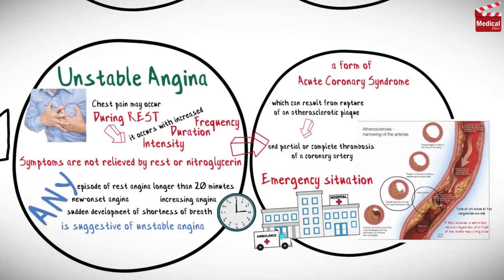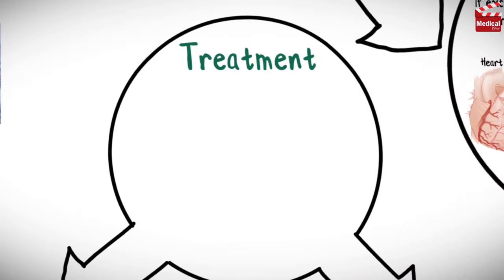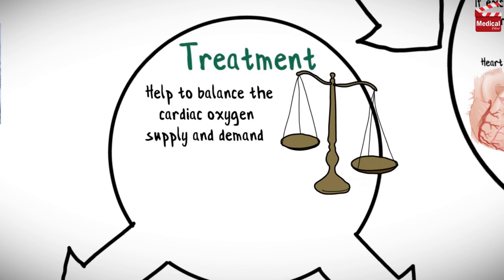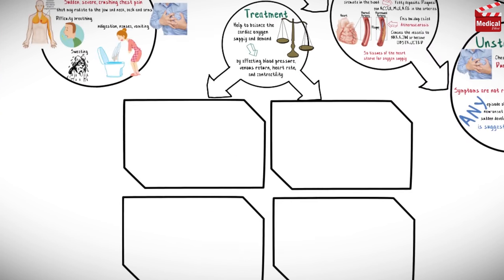To summarize the types: unstable and variant angina may occur at rest, while stable angina occurs with exercise. Stable and variant angina respond to medication, while unstable angina does not respond and requires hospitalization. To manage angina symptoms, we need drugs that balance cardiac oxygen supply and demand by affecting blood pressure, venous return, heart rate, and contractility.